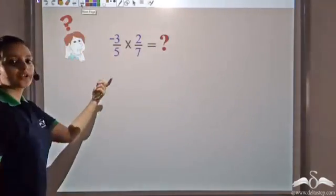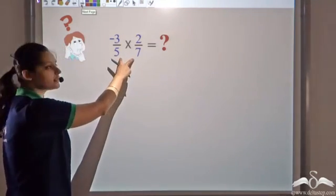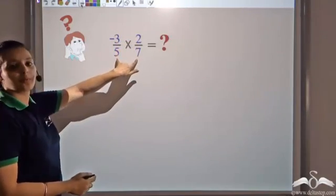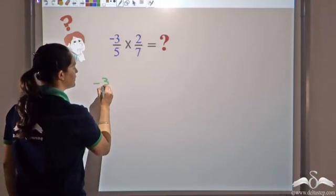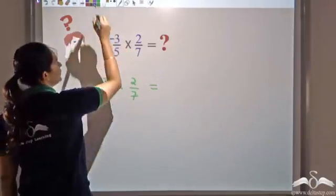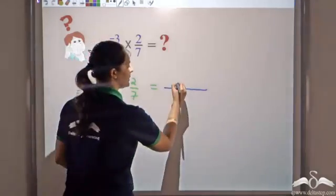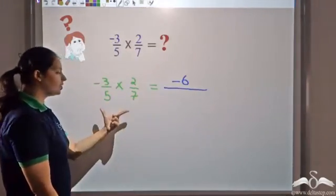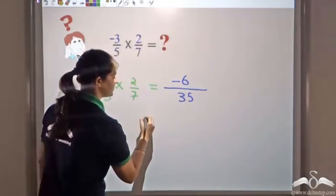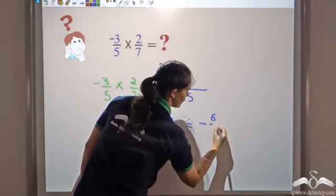So now can you answer this question? It's pretty easy — you just multiply the two numbers: numerators get multiplied and denominators get multiplied. So this would be negative 3 times 2 which is negative 6, and the denominators 5 times 7 which is 35. The answer is negative 6 by 35.